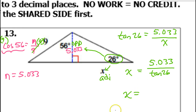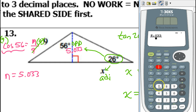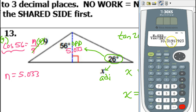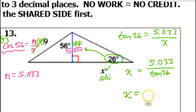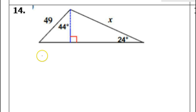Then you can just put this in your calculator. That's 10.319 — don't round up — 10.319. And that is how it is done.